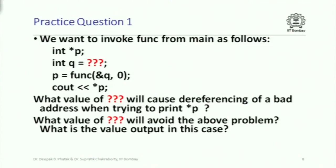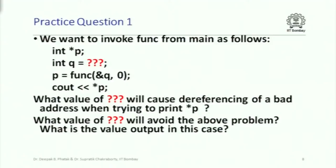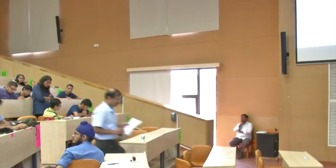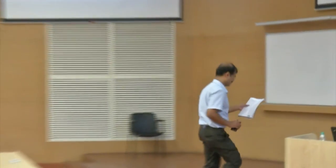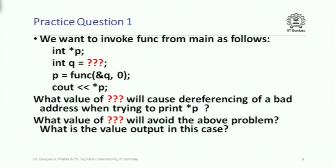The questions are: what value of q will cause dereferencing of a bad address when printing star t, and what value will avoid this problem — and what is the output value in the safe case? When dereferencing a bad address there is no guarantee on the value output, but when not dereferencing a bad address you should be able to determine the value.